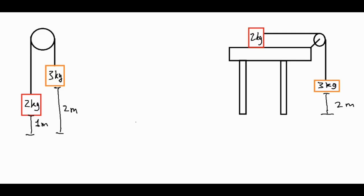In this video we're going to be taking a look at two block and pulley problems where they're typically solved with forces in Newton's second law, but we're going to be solving them with energy concepts as opposed to analyzing the forces. So let's take a look at this first scenario, a vertical pulley with a three kilogram block and a two kilogram block, and we're going to solve for the velocity of the entire system right before the three kilogram block hits the ground.